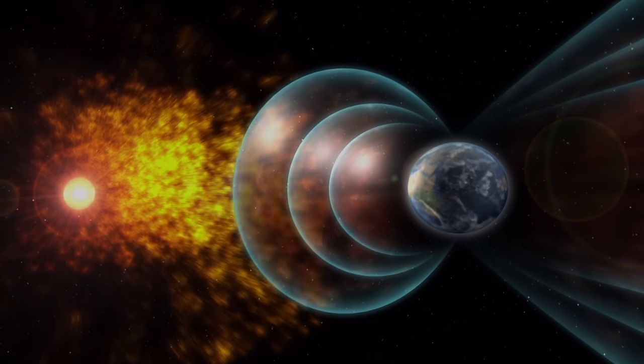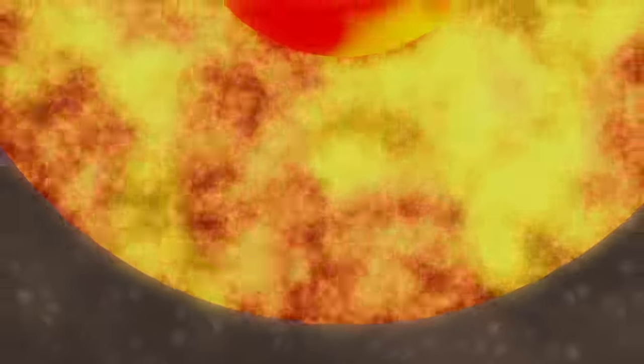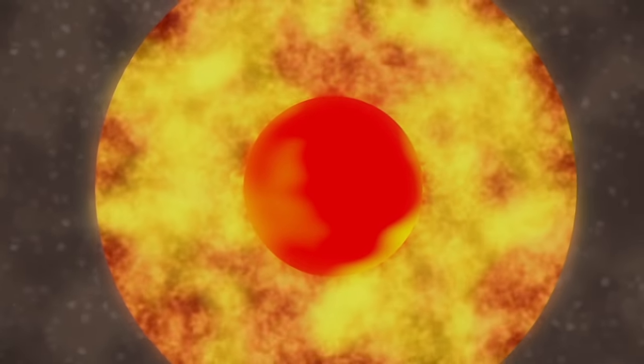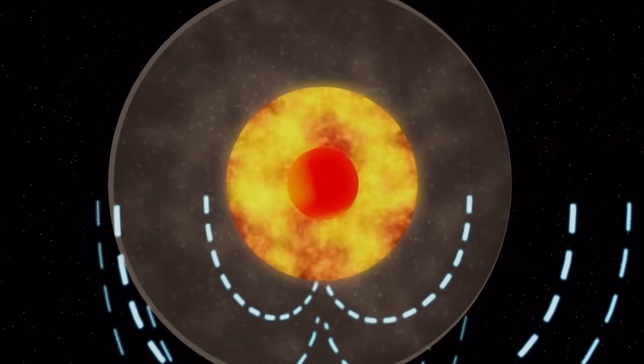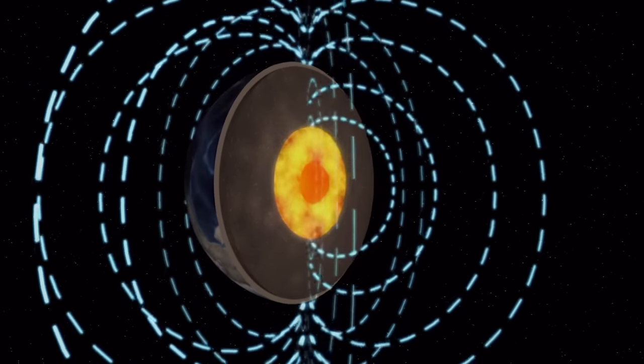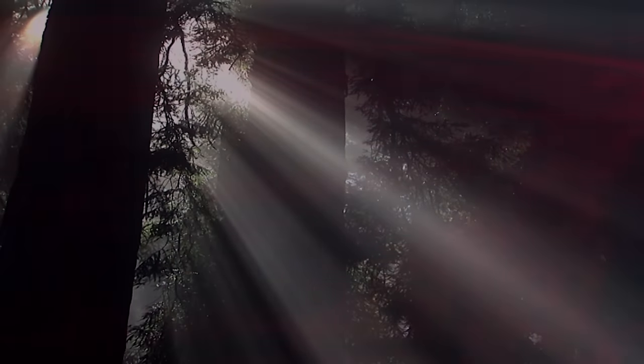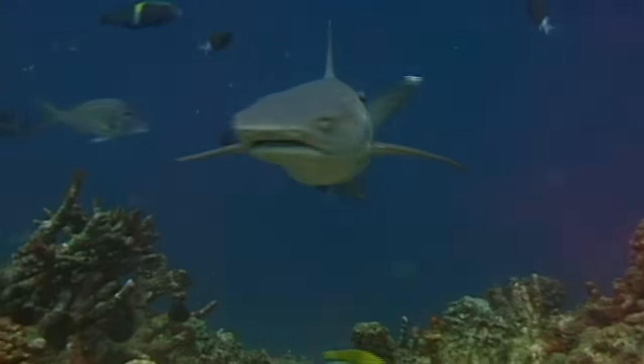The magnetosphere completely envelops the entire planet. This invisible shield flows out from the Earth's core. It punches through the South Pole, cocoons the entire Earth, then plunges back down through the North Pole. Without the magnetosphere, all life on Earth would be vulnerable to high-energy solar radiation.